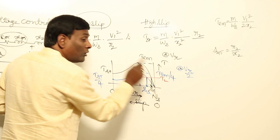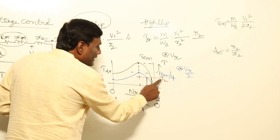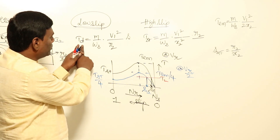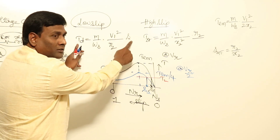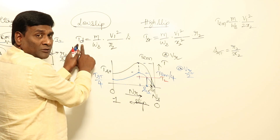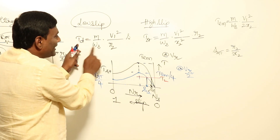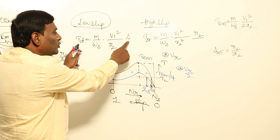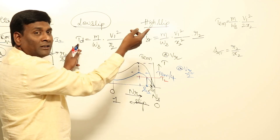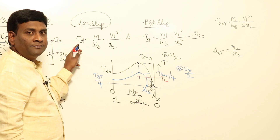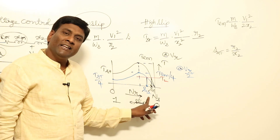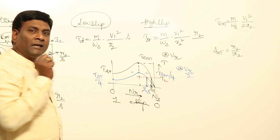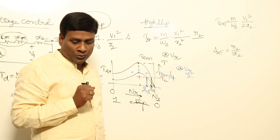For a given torque, since TD is constant and M, omega_S, R2 are not changing, V1² / S1 should equal V2² / S2. From this, S2 can be calculated. By this relationship, speed can be reduced — speed can be controlled.